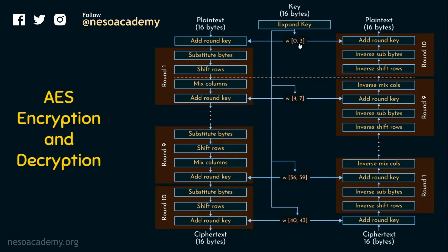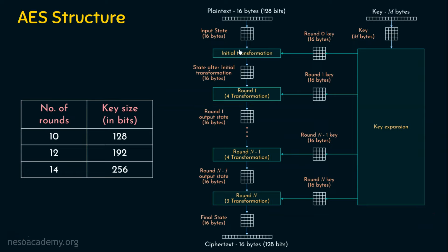The key scheduling algorithm first generates the key for the initial transformation — words 0 to 3. A word is 32 bits, so 4 words equals 4 × 32 = 128 bits, which is the round zero key. A simple XOR operation is carried out: the plaintext 128 bits are added with this 128-bit key. This key is the round key for the initial transformation, referred to as the round 0 key. Once the XOR operation is performed, the result enters round 1. The output of the initial transformation — just the plaintext added with the round key via XOR — is stored in the state array and enters round 1, which has 4 transformations.